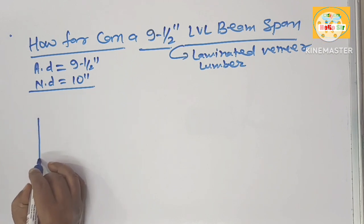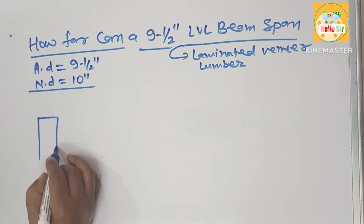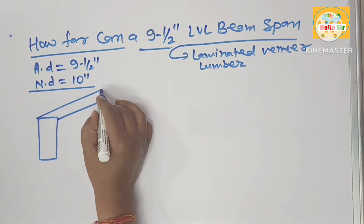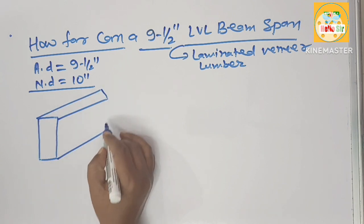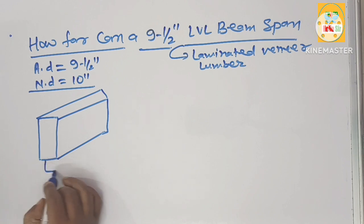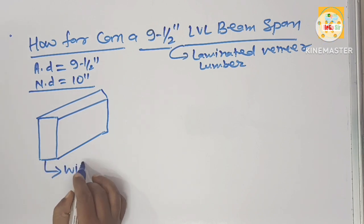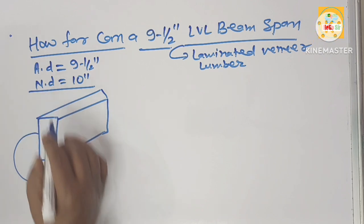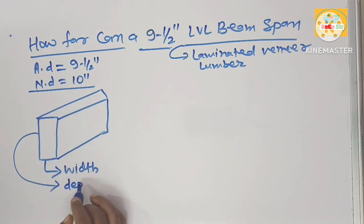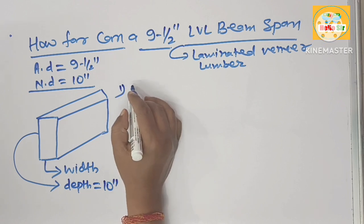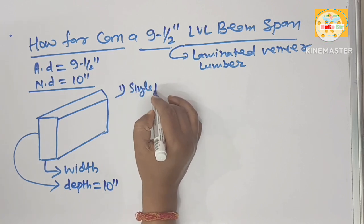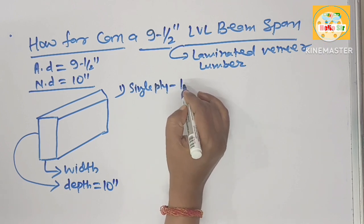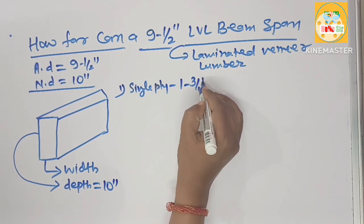Here we make rough diagrams to understand their width and depth of the LVL beam. This one is their width or thickness and this dimension gives us the depth which is nominal depth about 10 inches. Width can be single ply which has thickness about 1¾ inches.